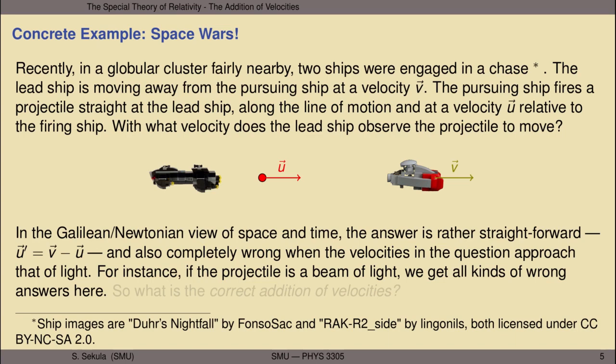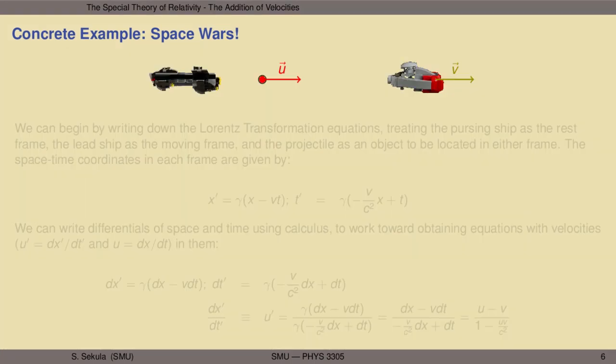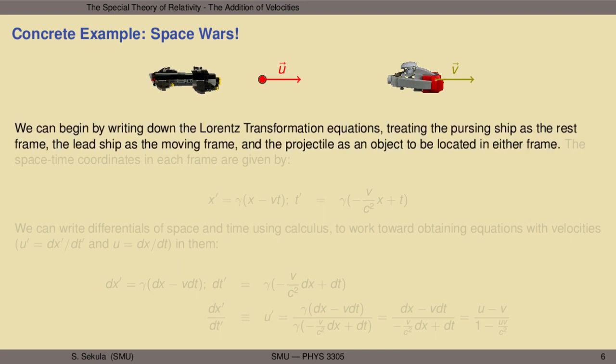So what then is the correct addition of velocities in a problem like this? That's the question we want to figure out in this lecture. We can begin by writing down the Lorentz transformation equations, treating the pursuing ship as the rest frame, the lead ship as the moving frame, and the projectile as an object to be located or studied in either frame.